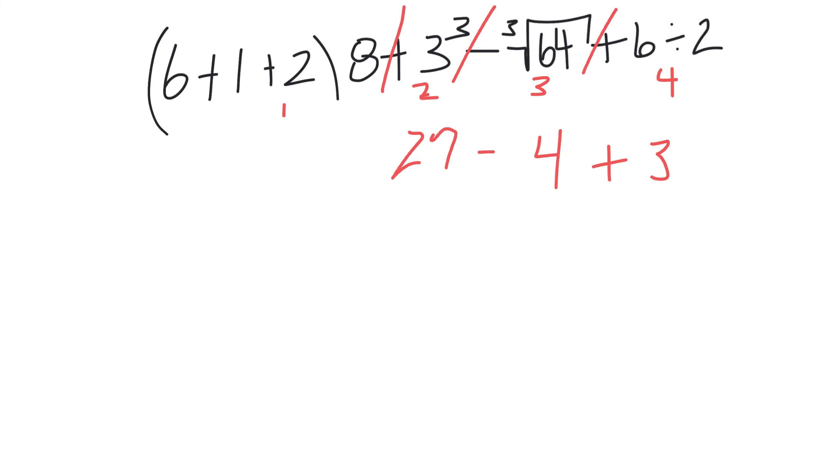The only one I got left is the first one here, which I have to do what's in the parentheses first. So I have 6 plus 1 which is 7, 7 plus 2 which is 9. I got 9 times 8, which gives me 72.